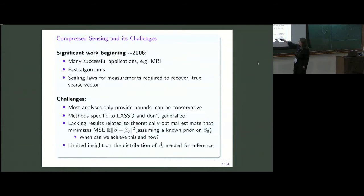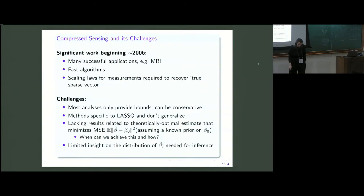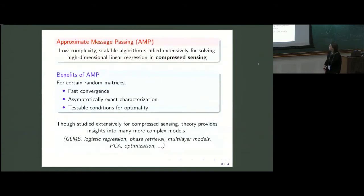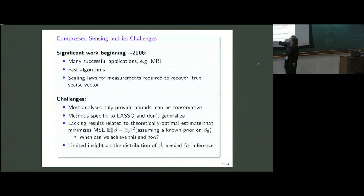I'll refer to this optimization program as the LASSO and the high-dimensional regression problem with sparse beta as compressed sensing. Starting around 2006, there were many successful applications, fast algorithms for optimizing this cost function, scaling laws, and information-theoretic results about measurements required to recover sparse beta. But there were challenges: the analysis only provided sometimes-conservative bounds, methods were specific to the LASSO, results lacked theoretically optimal estimates like MMSE, and there was limited insight into the distribution of the vector recovered by the LASSO.